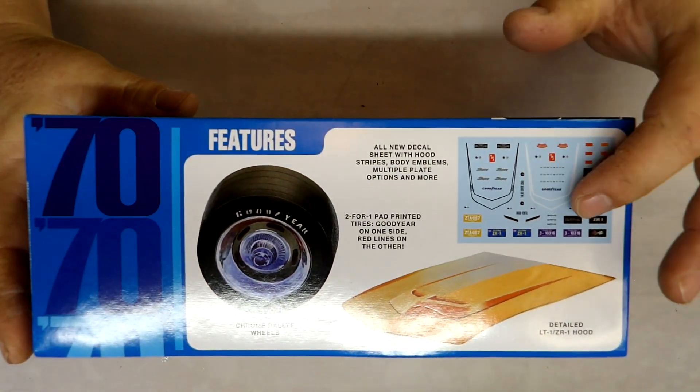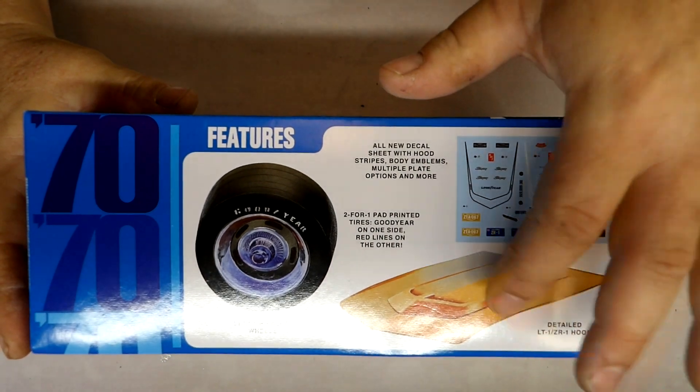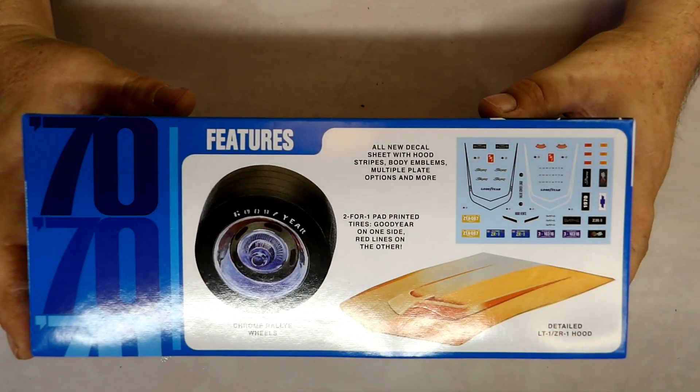Over here it's got the different striping, the rally wheels, shows the hood, you know, the LT1 ZR1 hood.